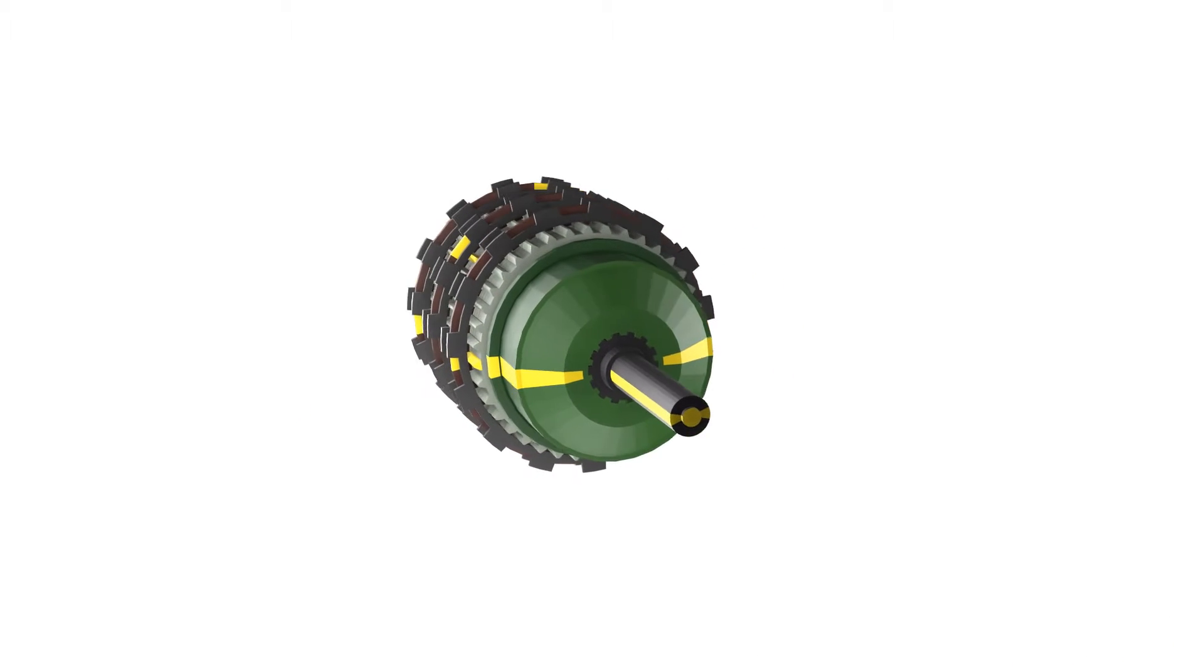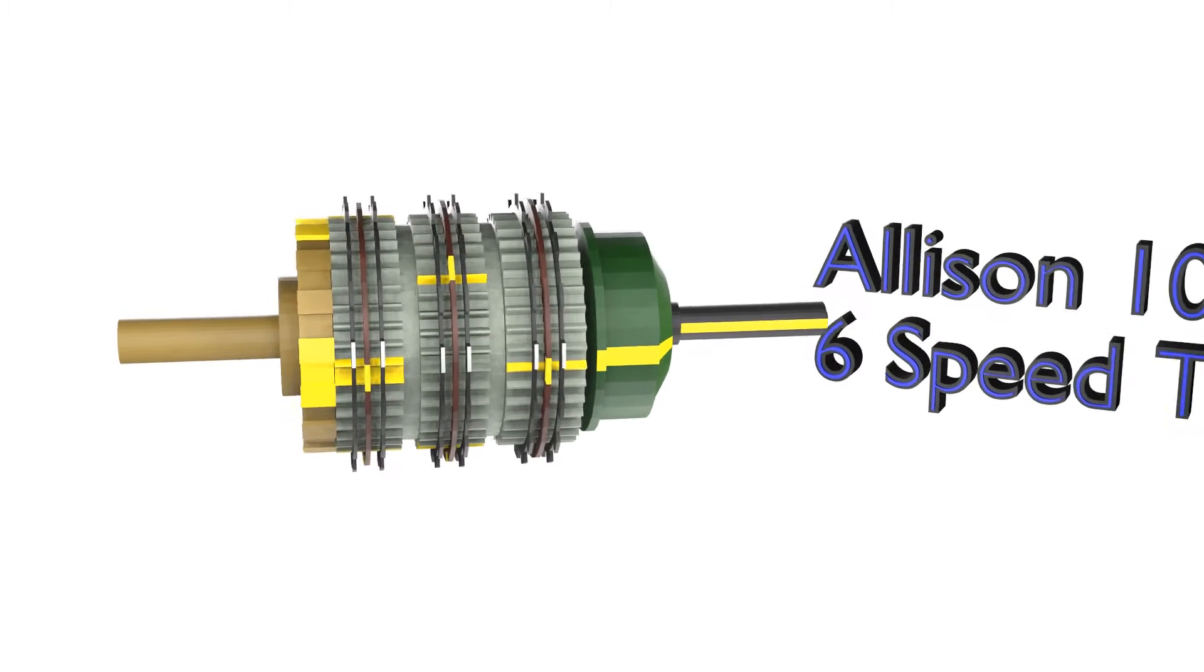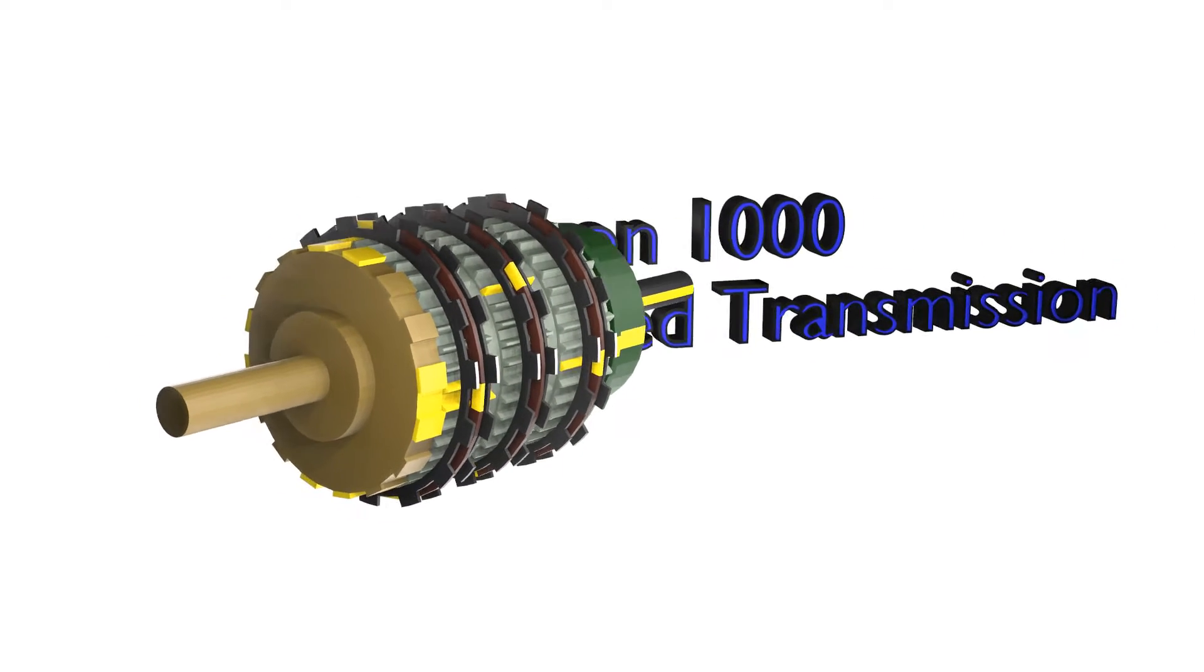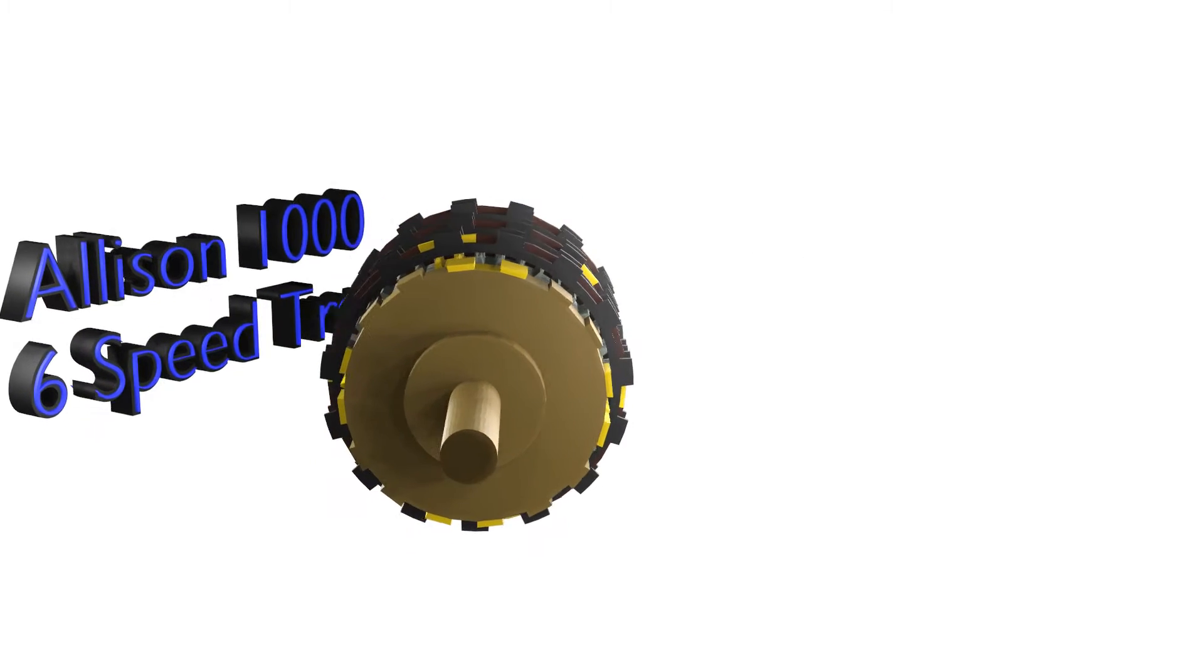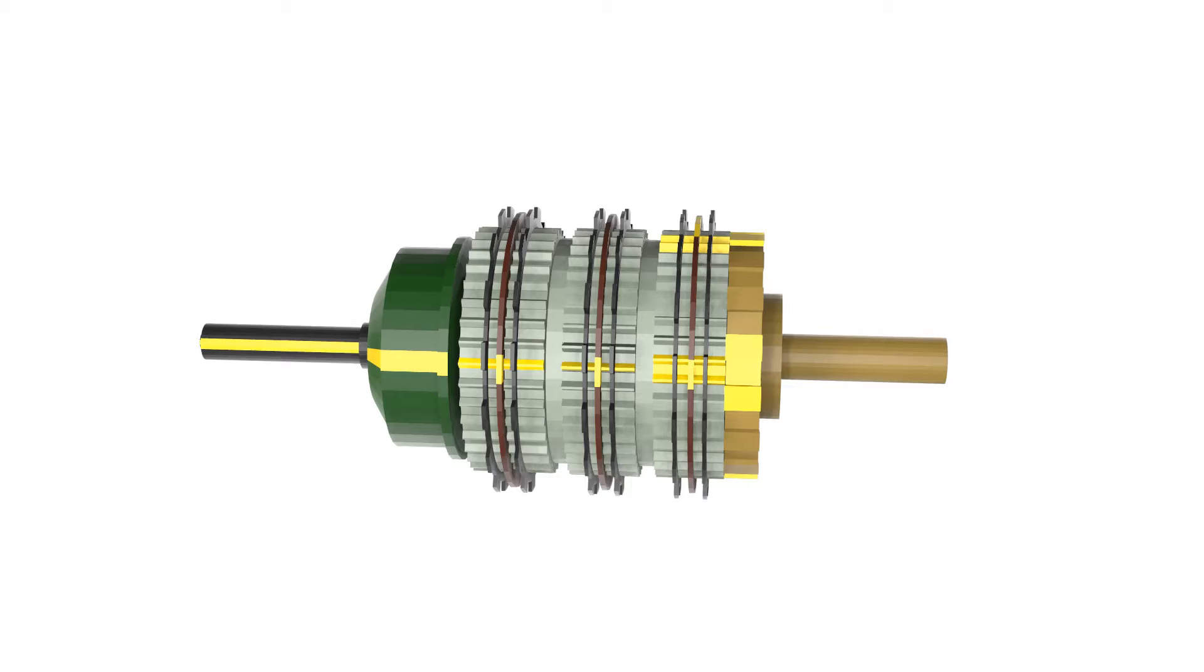Today we'll look at an automatic transmission and see how it works. We're gonna break it down to make it easy to understand. This model is a replica of the Allison 1000 6-speed transmission.